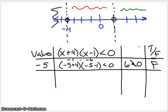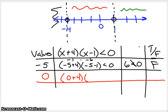So, now let's look at the red region. So, the red region, we have lots of numbers to choose from, but I would like to use 0 because it makes the math just a little easier. So, 0 plus 4, 0 minus 1. Is that less than 0? Well, 0 plus 4 is 4, 0 minus 1 is negative 1. 4 times negative 1 is negative 4. And indeed, that is less than 0, and it's true.